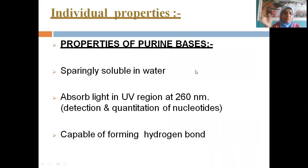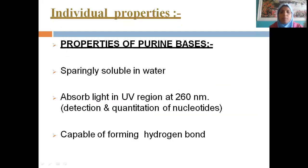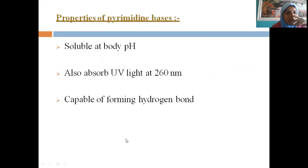Now, the properties of purine bases: adenine and guanine are purines. They are sparingly soluble in water, absorb light in the UV region at 260 nm, and are capable of forming hydrogen bonds. They are soluble at body pH. These are the main chemical properties of purines.